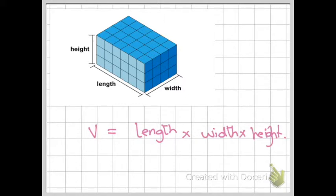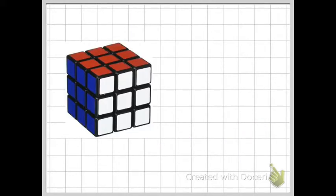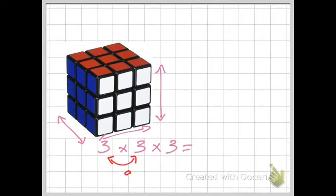So let's use that formula and put it to the test. So here I have a Rubik's cube, and I can see that the length is 3, the width is 3, and the height of the cube is 3. So if I multiply 3 and 3 together, I get 9. Then if I multiply 9 by 3, I get 27.